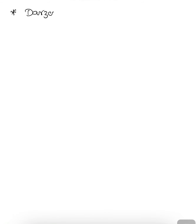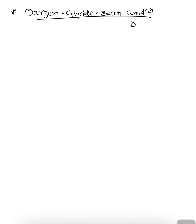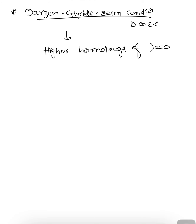Darzen Glycidic Ester Condensation, also called DGEC, is useful to produce higher homologs of aldehydes or ketones — higher homologs of the carbonyl component in general. If you want to increase one carbon atom in an aldehyde or ketone molecule, we can make use of the Darzen Glycidic Ester Condensation reaction.